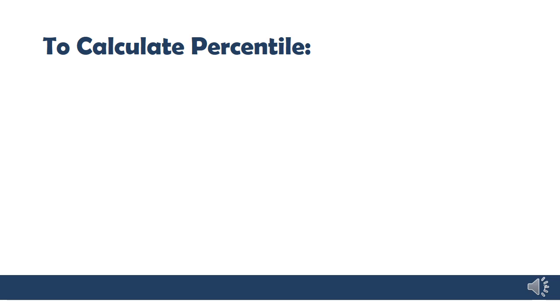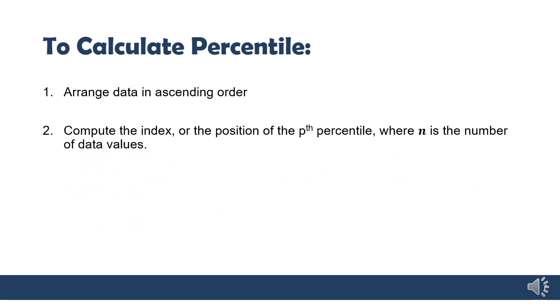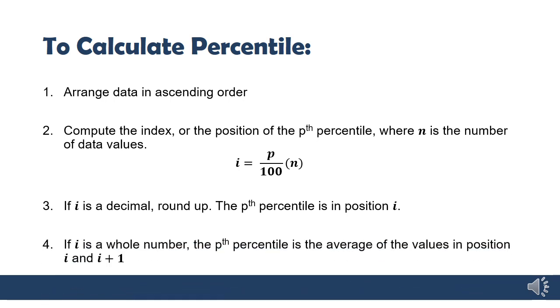In summary, here are the steps you need to take. Arrange the data in ascending order if it's not already. Compute the index, which is the position of the percentile, where n is the number of data values. There is that formula again that the book has, but really to me, I just take the percentage of the number of values. If you get a decimal, you round up.